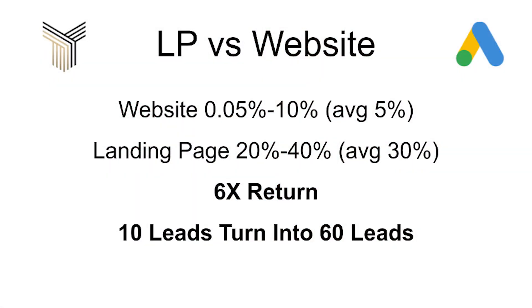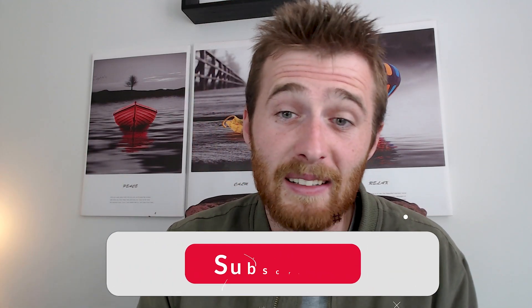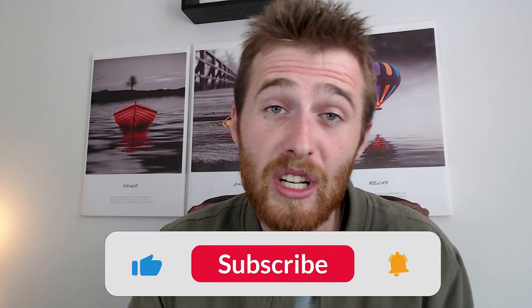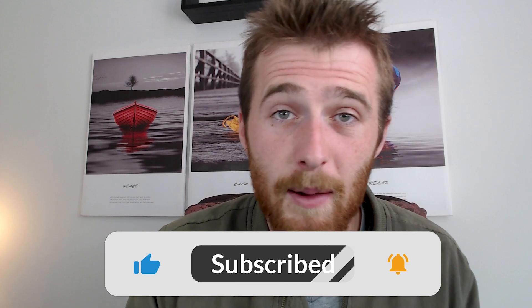A normal landing page will convert anywhere from 20 to 40% — so 20 to 40 people out of 100 will convert into a lead or prospective buyer, compared to a website which normally converts at a little less than 1% all the way up to 10%. 10% is really pushing it. So you could literally quadruple your results — say you take an average of a 5% website conversion rate to a 25% landing page, that's five times the results.